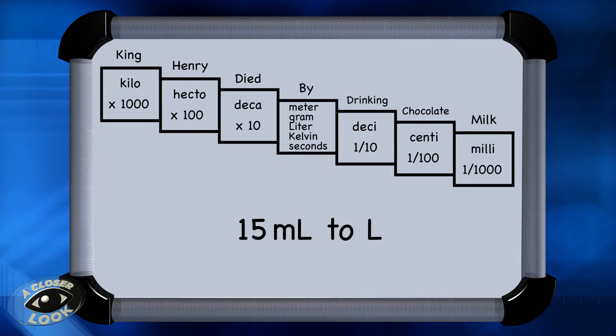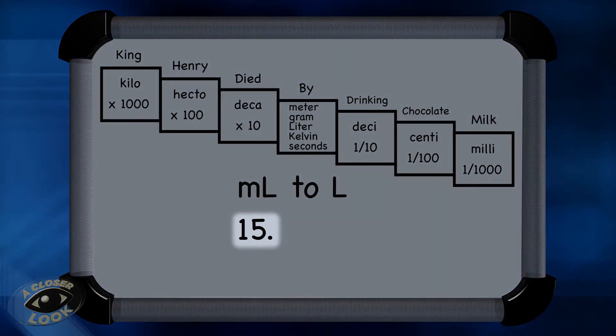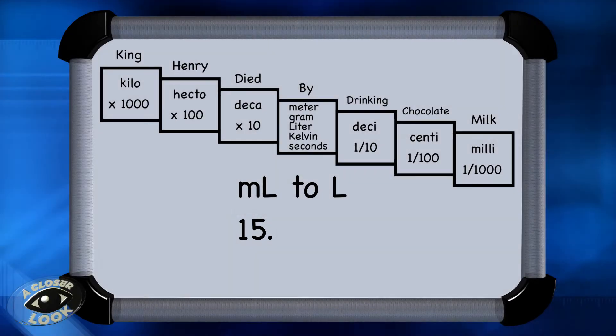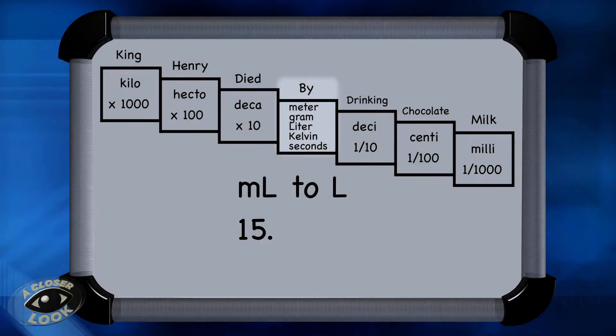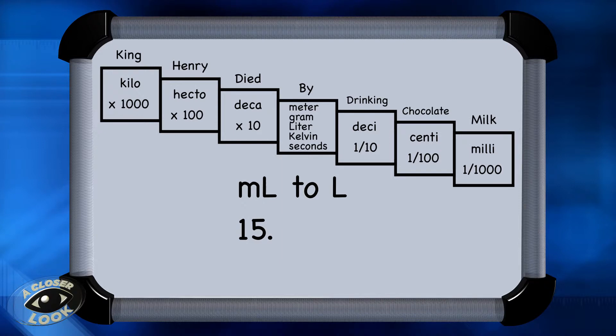We put an understood decimal point after the 15 milliliters, and we look at the chart and find milli here, and notice liters is one of our base units. So if we're going from milliliters to liters, we have to move one, two, three places to the left.